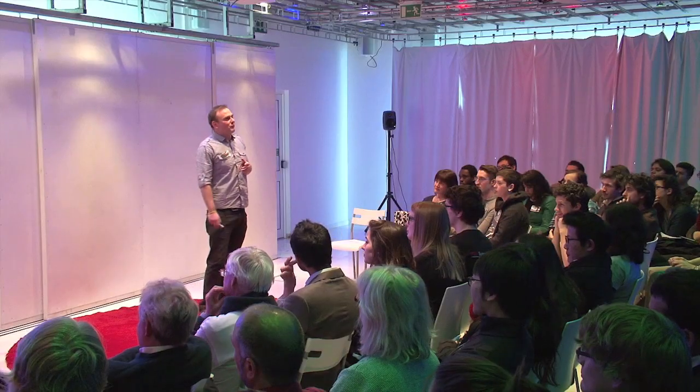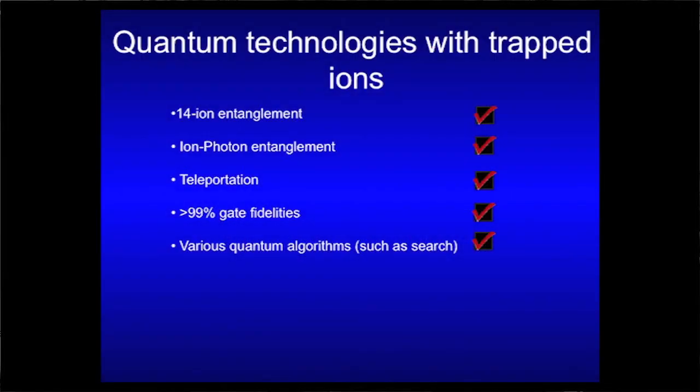So, a lot of achievements have been made, building a quantum computer. And so, for example, we've built a 14-qubit quantum computer already. We've entangled ions and particles of light, ions and photons. We've teleported. Who likes Star Trek? You know? So, teleportation has been done with single atoms. And quantum gates have been done. And all sorts of things have been done.